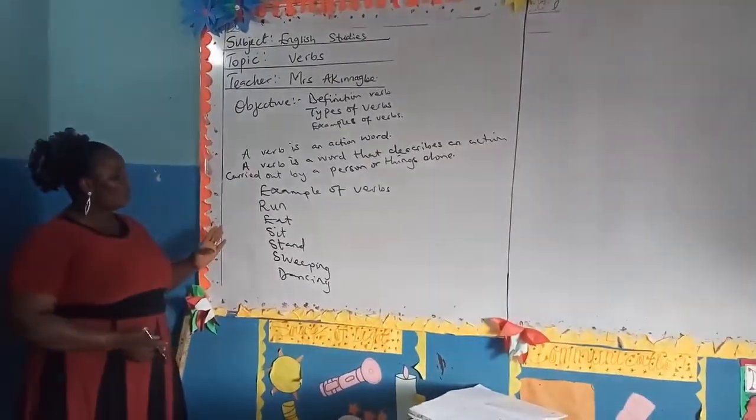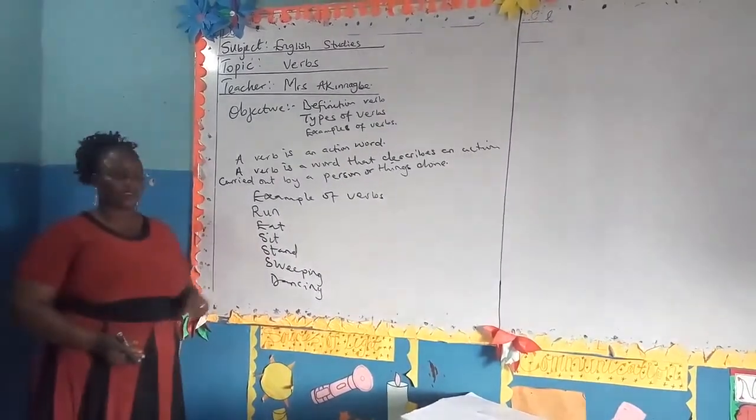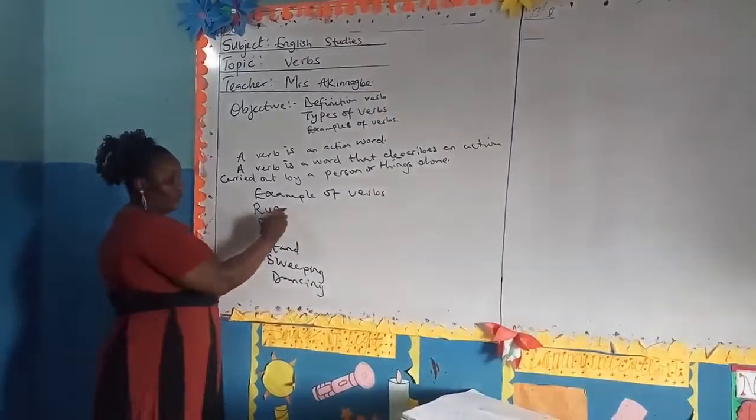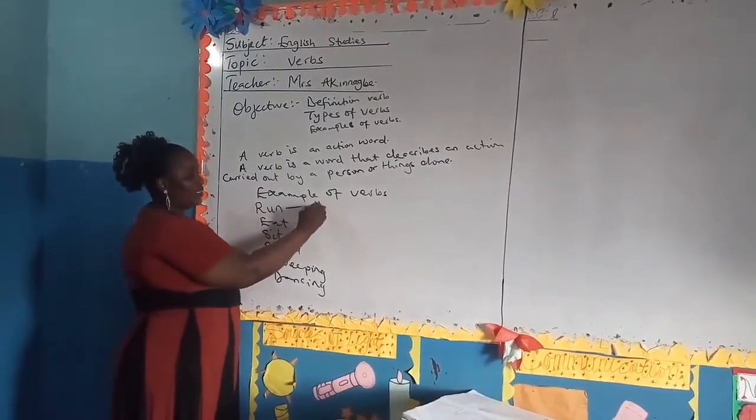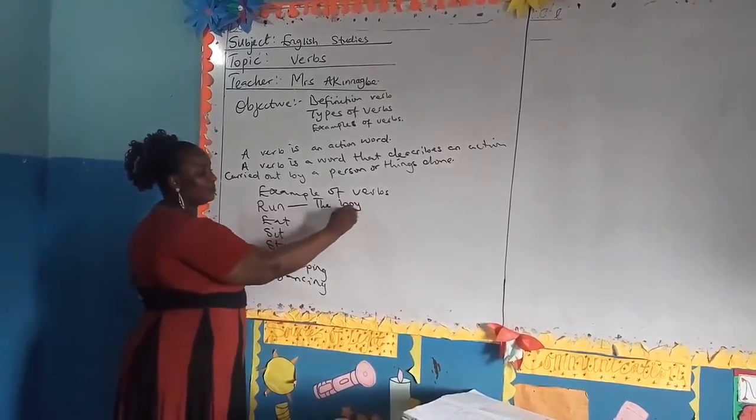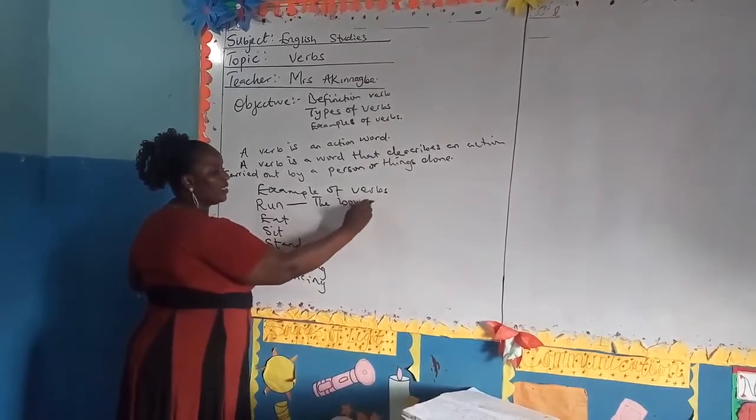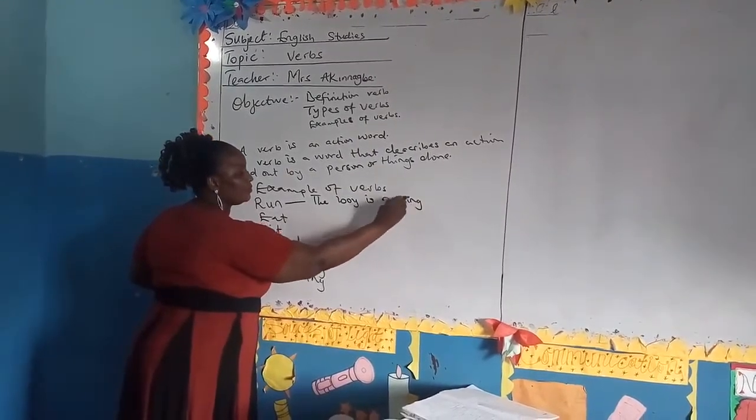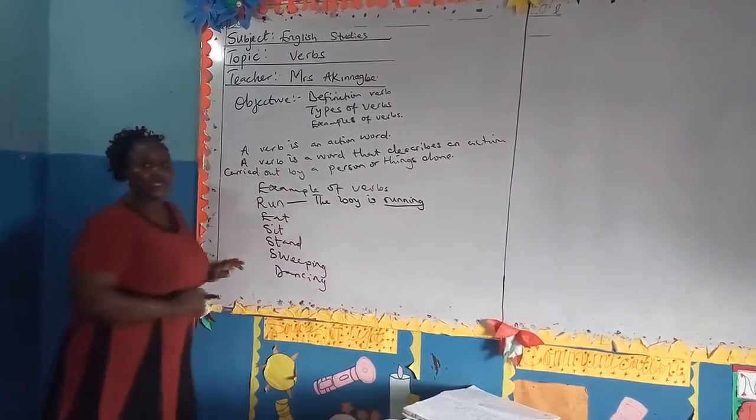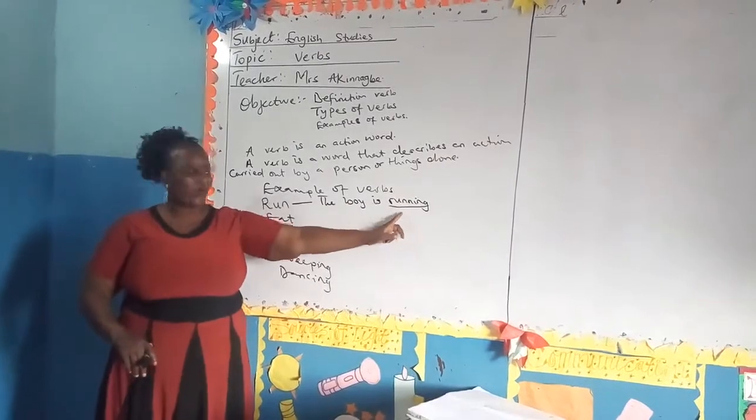So from here, we want to make a sentence out of these words. So the first thing we do is how to make a sentence with this word run. The boy is running. The action carried out is running.